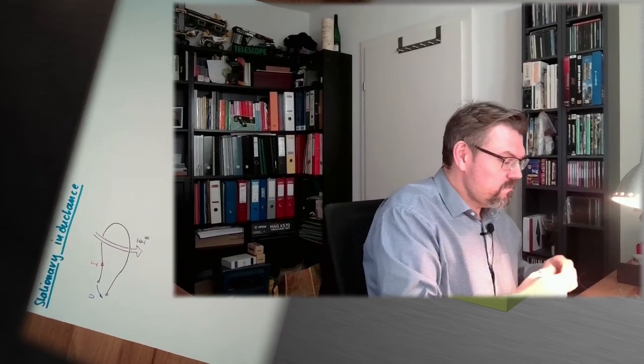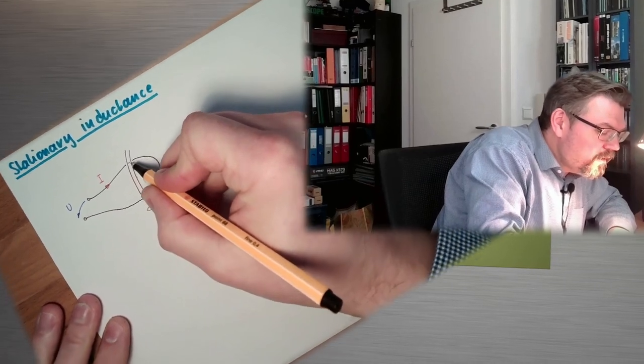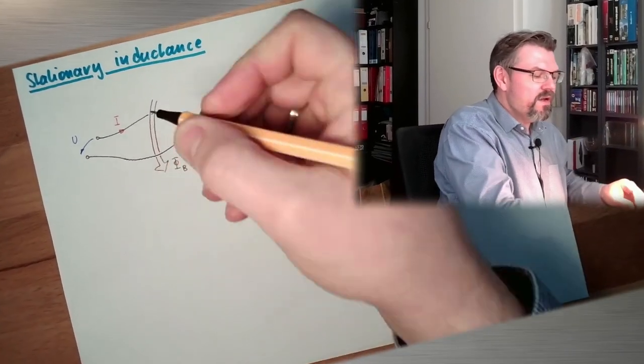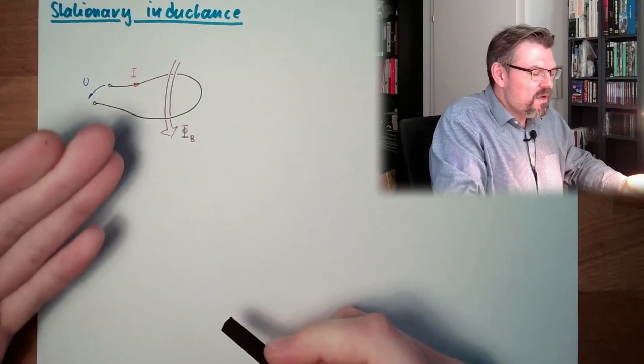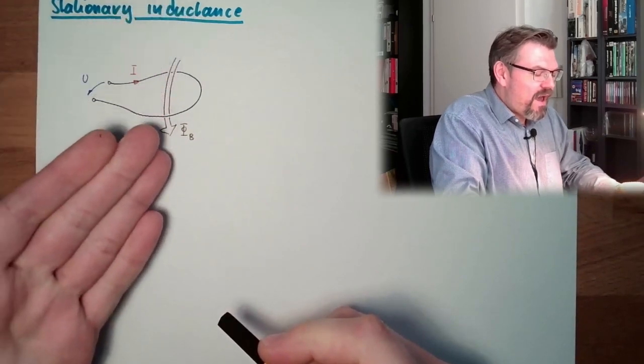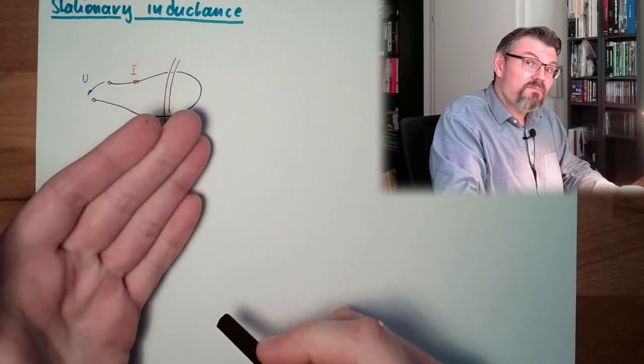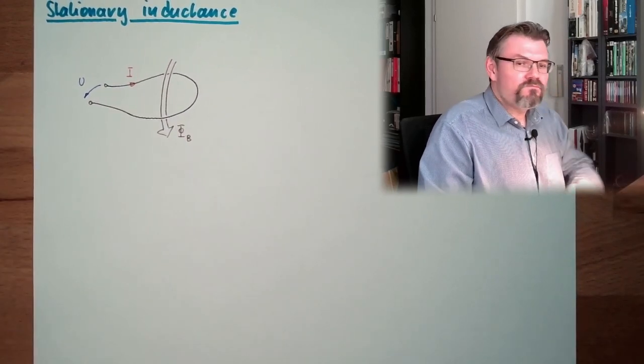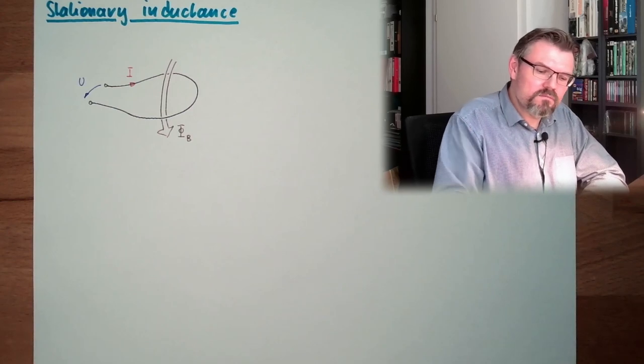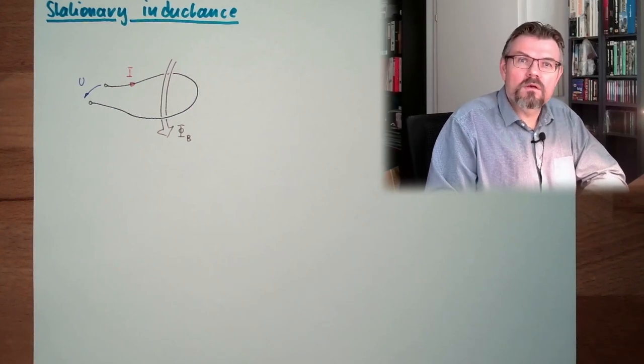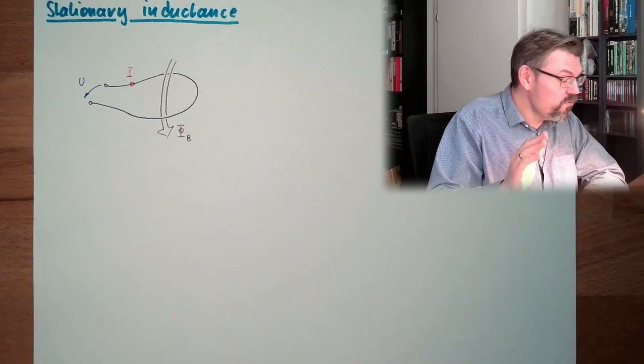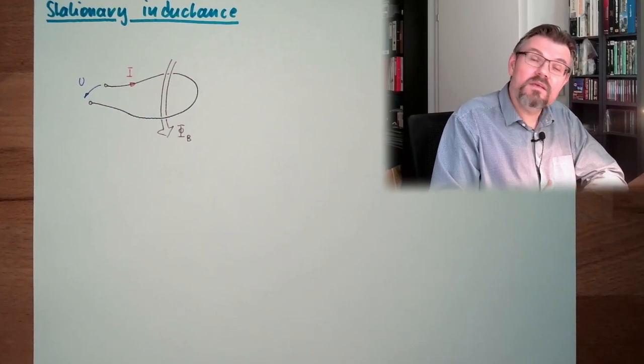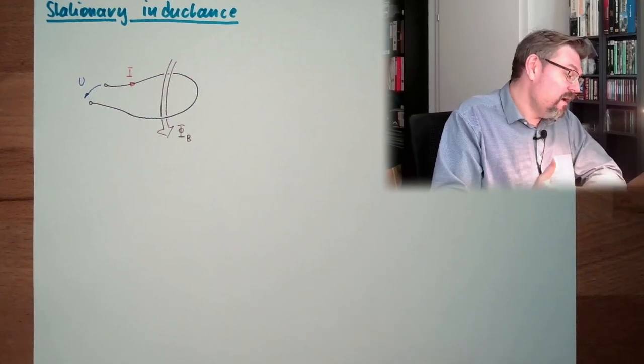What we have is a loop of some conductive material. Maybe I make it... it's not open here, it's closed. So this is the loop and we have a magnetic flux passing through this loop. And now we want to apply our law and say, okay, sum of all u is minus d phi dt.